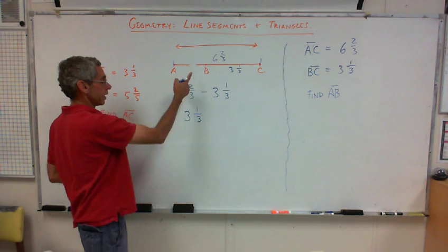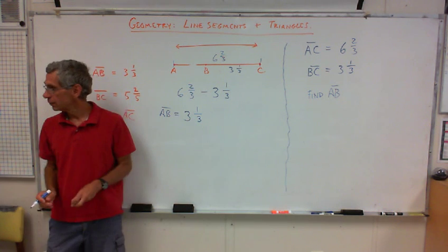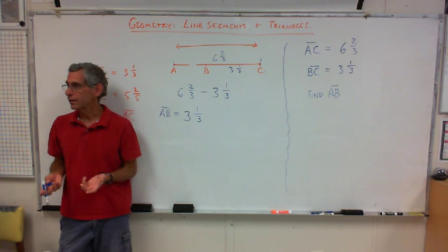Exactly. So, that's what AB is. AB is equal to three and one-third, right? So, it's logical. It makes sense.